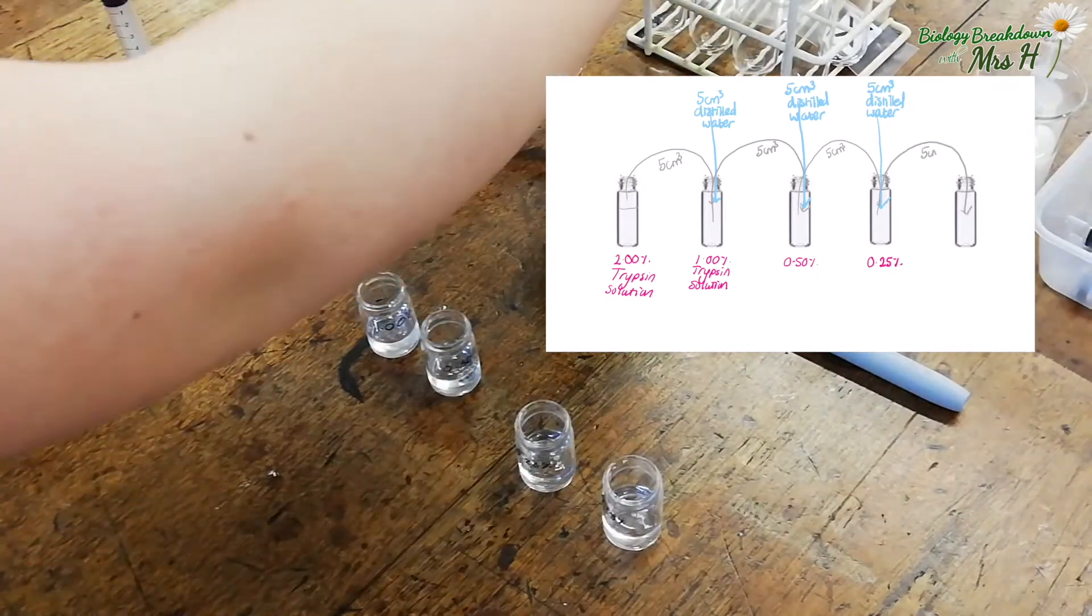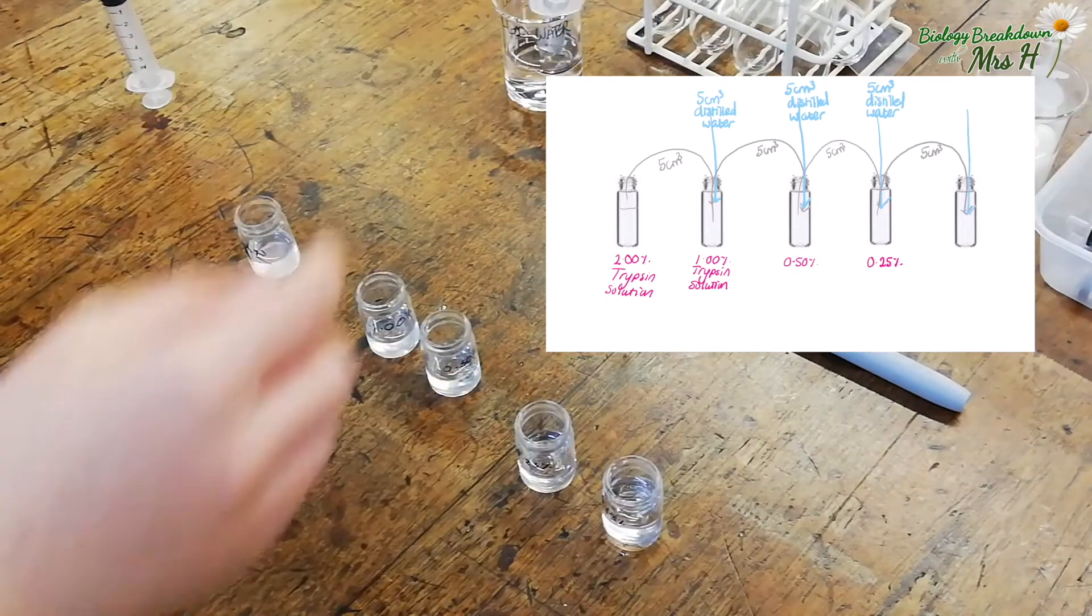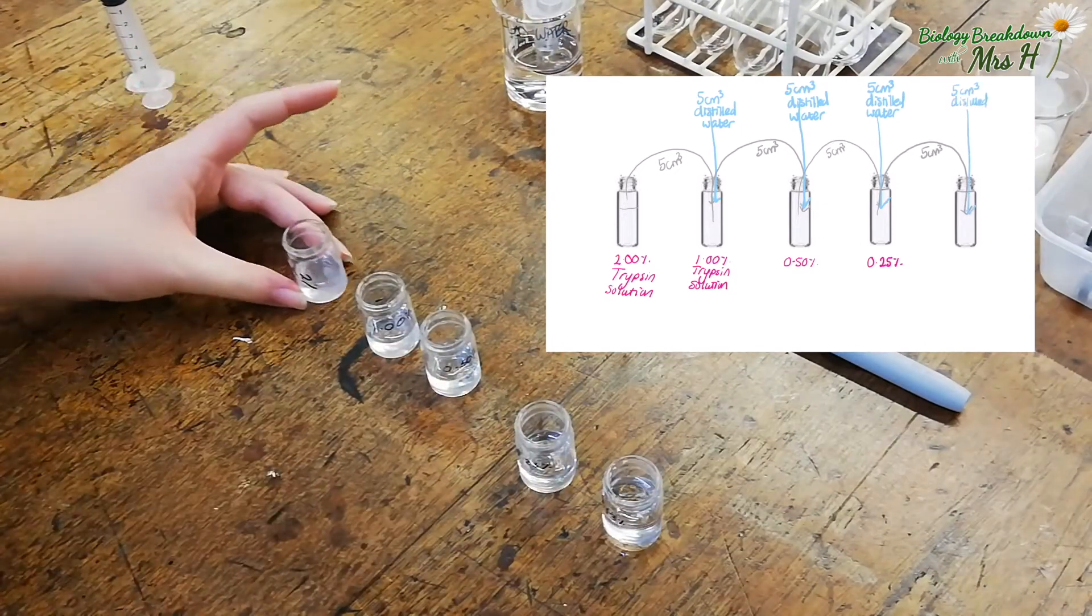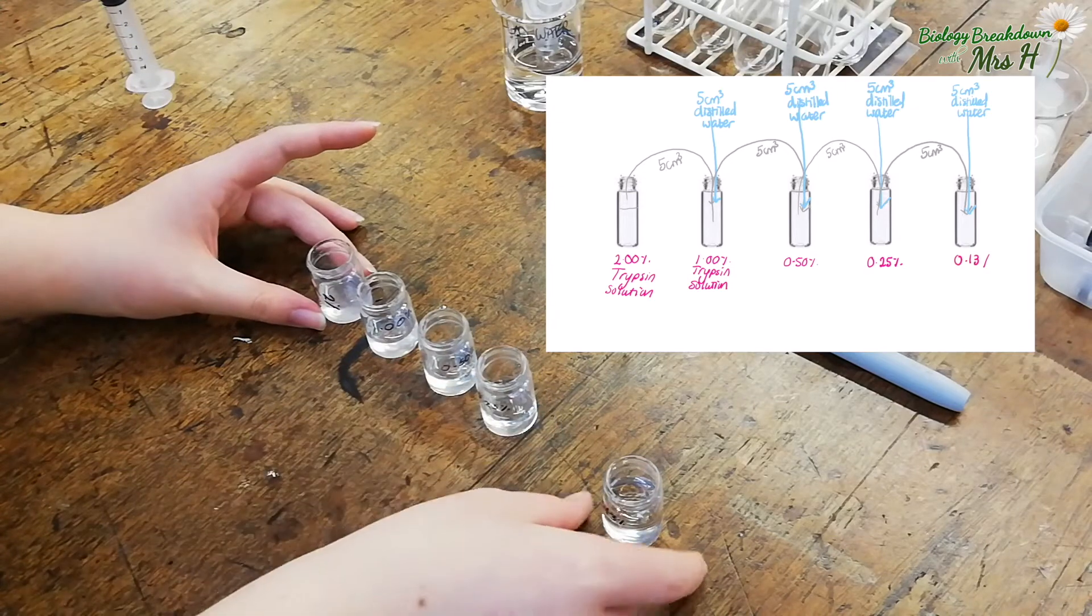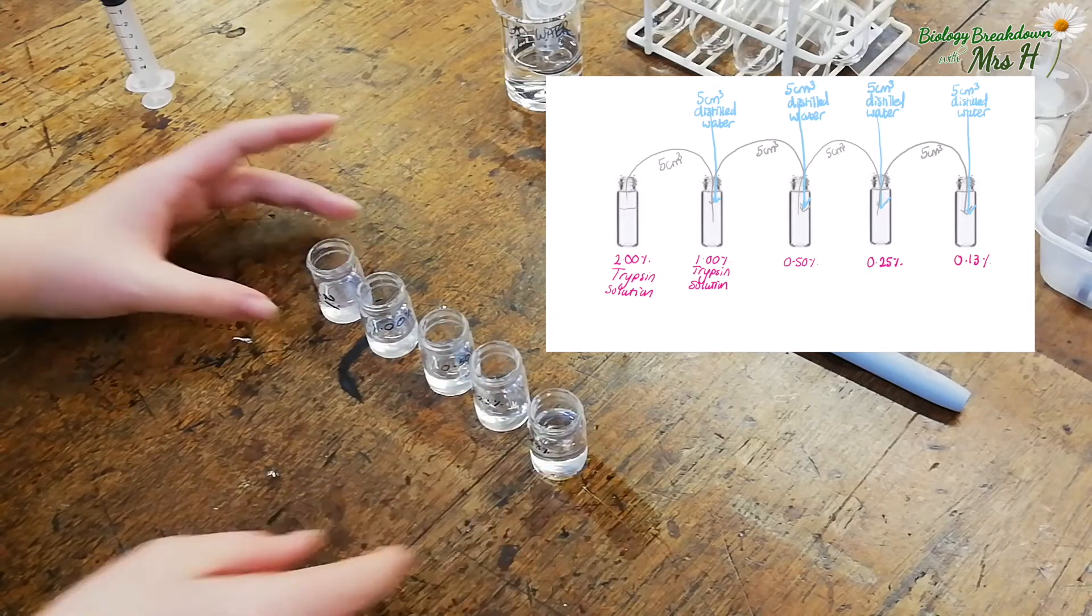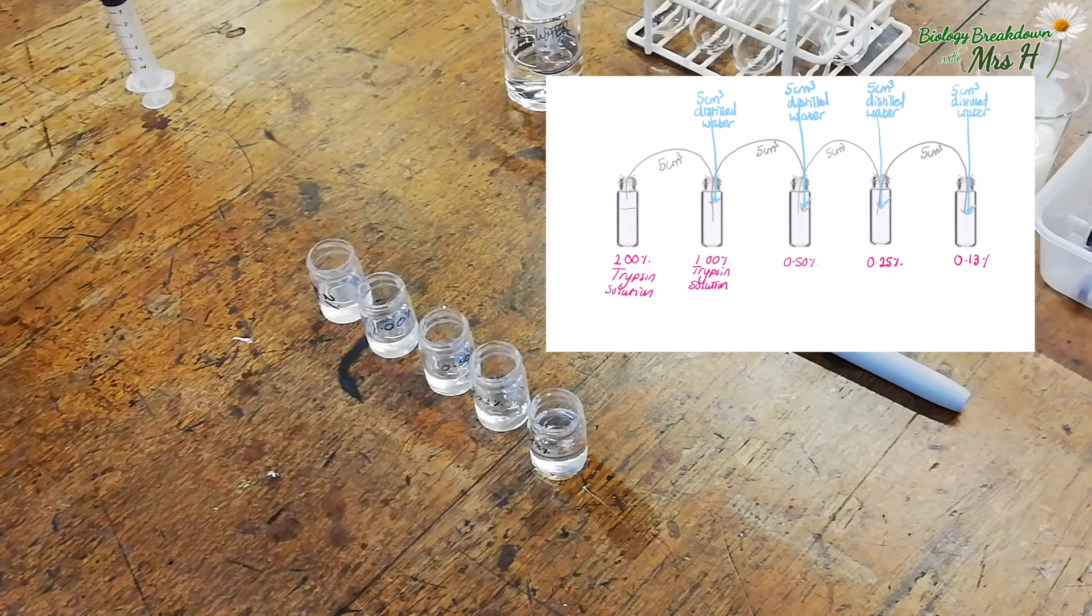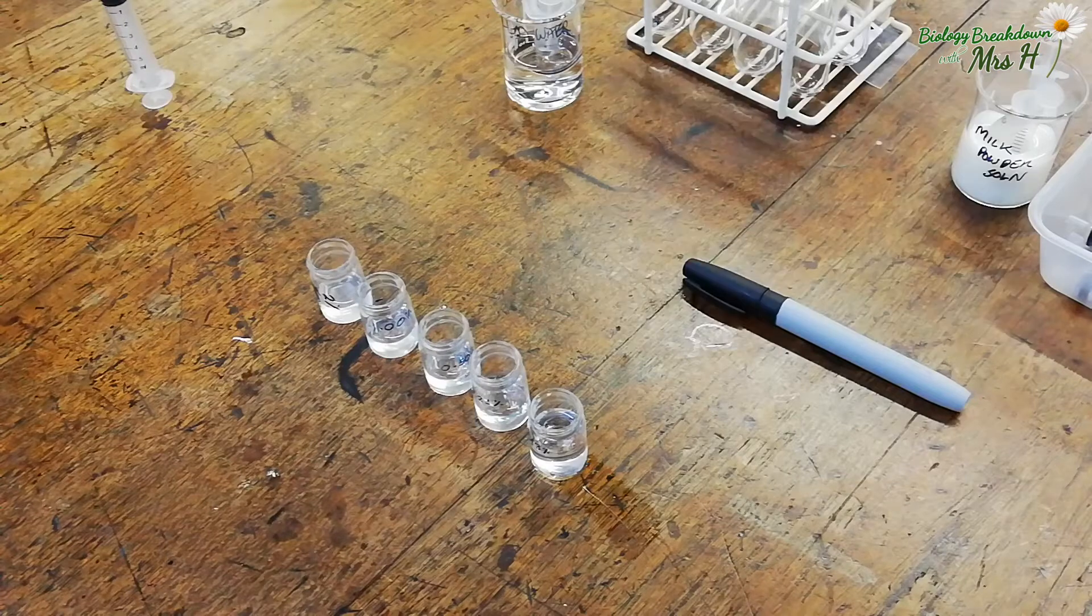Just halving the previous concentration each time and adding 5 cm³ of distilled water. Then you end up with 2%, 1%, 0.5%, 0.25% and 0.13% trypsin solution. Now you've got all your trypsin concentrations and you've used the serial dilution technique.